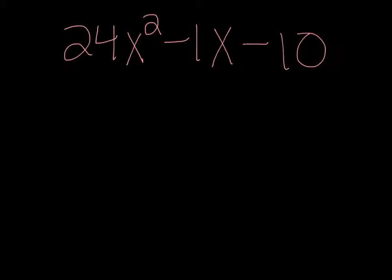So there's different ways to factor, but the method that I prefer when you have something in front of x squared other than just plain old 1, is to multiply these two numbers, which would make it negative 240.